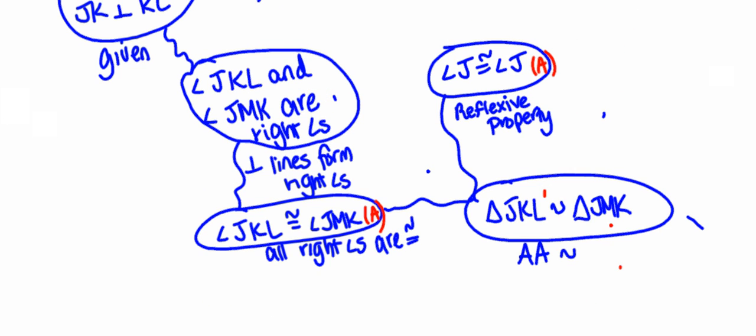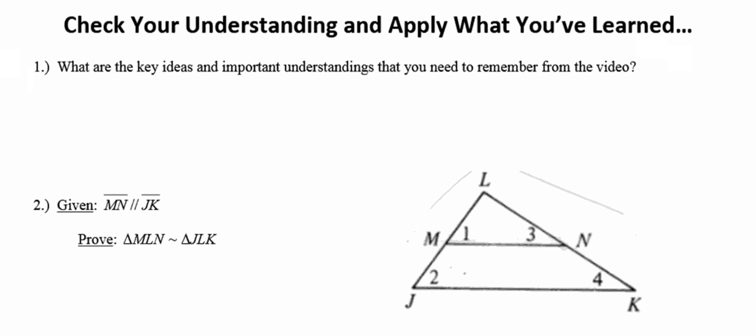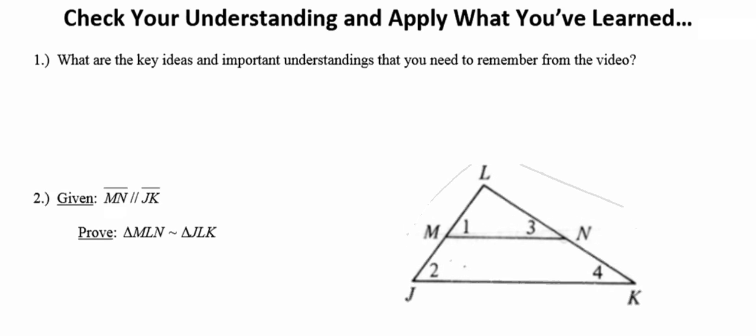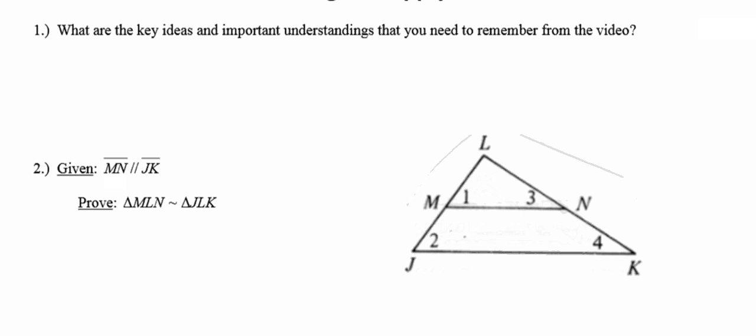So there you have it. That's pretty much all there is to it. Any time you're trying to prove a pair of triangles similar, the postulate that you want is angle-angle similarity. I want you to go ahead and at the top of the next page summarize the key ideas and important understandings. What are the important things you're going to have to remember from this video. And then there's a proof on that page so you can apply what you've learned.